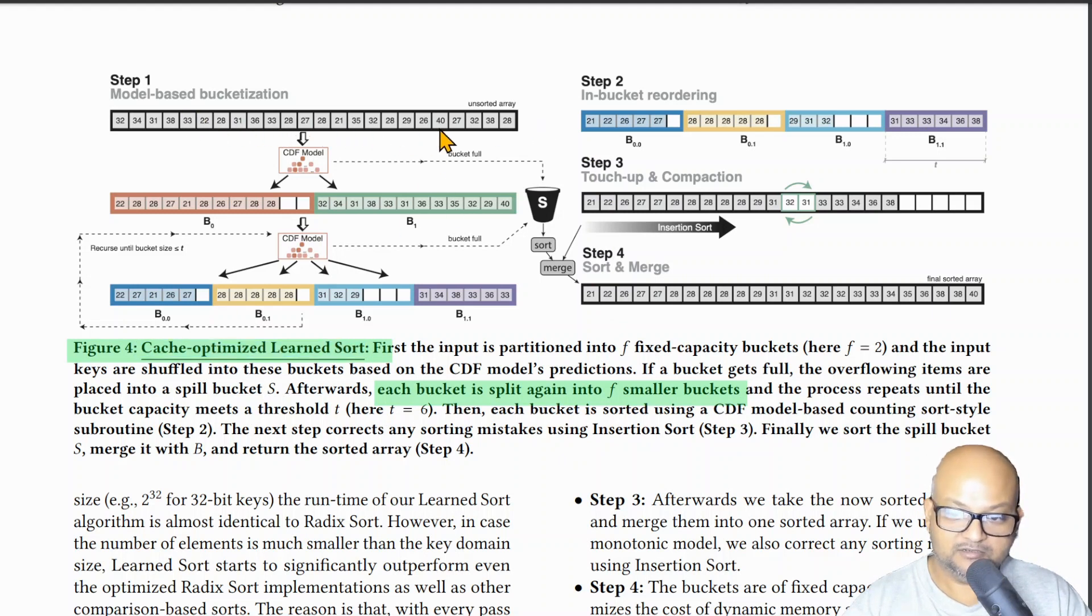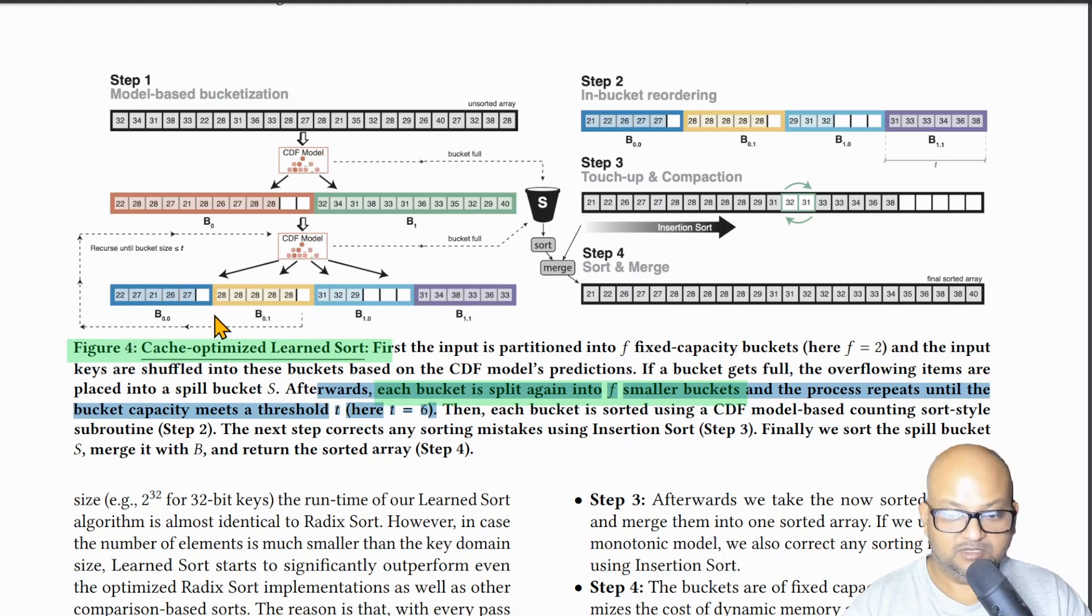We break the entire original unsorted array into a fixed number of buckets, and the input elements are put into these buckets based on the prediction from the CDF model. And we do this recursively, breaking those buckets into smaller buckets until we meet some lower threshold. Here the authors chose six. So we keep breaking the array into smaller and smaller buckets until we hit sub-buckets of size six. All the collisions during this process go into a spill bucket on the side. And now when we hit the bottom of this process, we then unwind the recursion while correcting all the incorrectly sorted elements using insertion sort, and then finally we sort and merge the spill bucket back into the final sorted array.